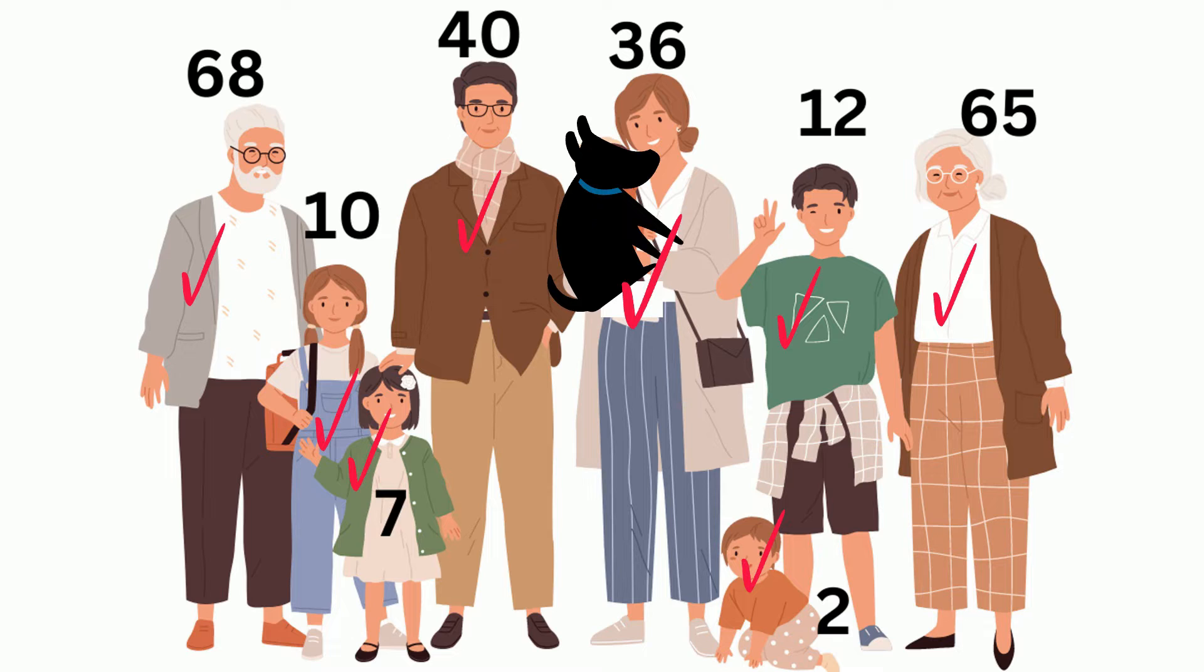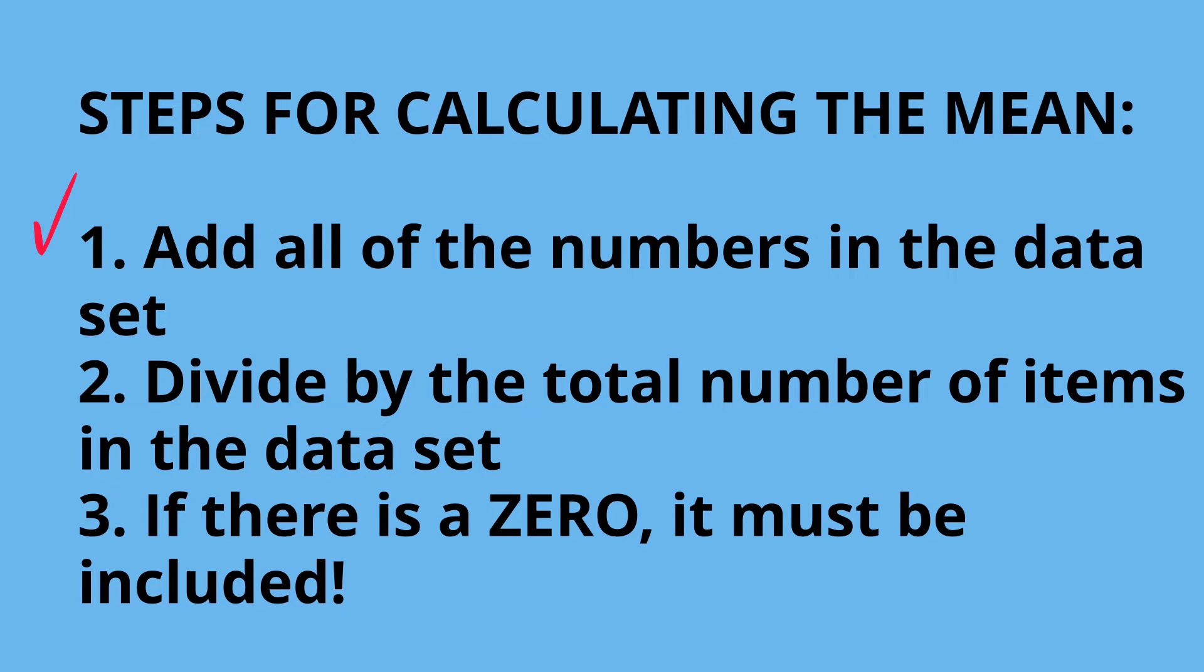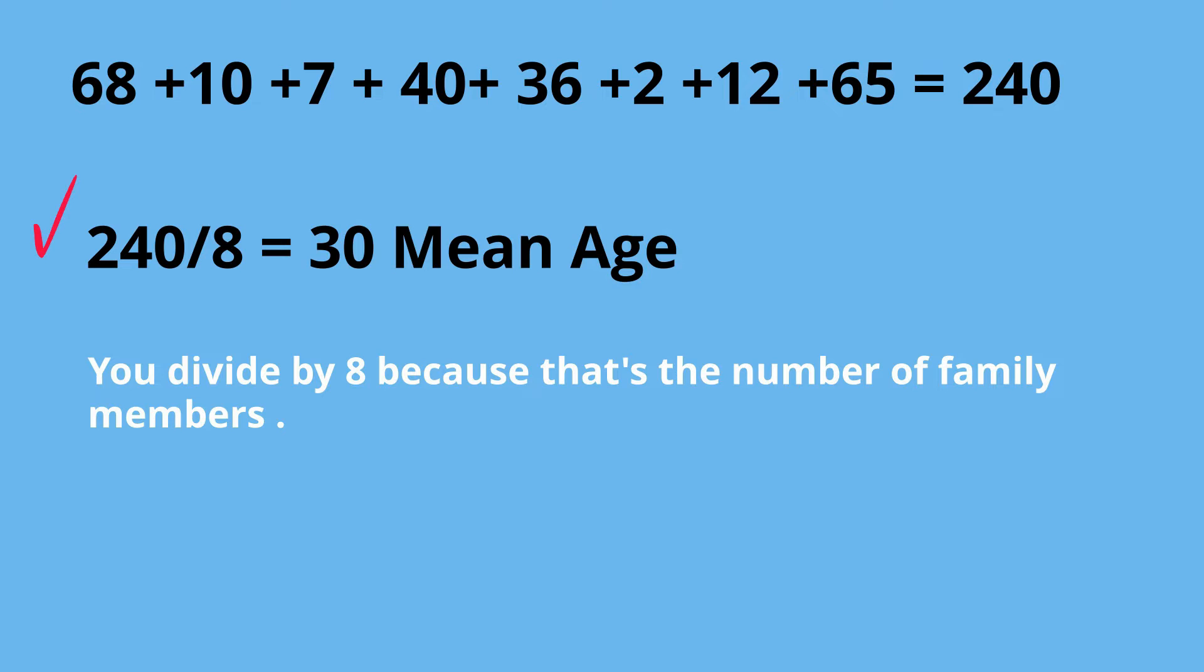Let's first calculate the mean of the ages. Mean and average are the same thing, so let's follow these steps. We're going to add all the numbers in the data set. We're going to divide by the total number of terms in the data set, and if there's a zero, it must be included. Let's add all the ages together. Now let's divide by the number in the data set. Remember, if there's a zero, it would be included. So we have 240 divided by 8, and that equals 30. So the average age is 30.